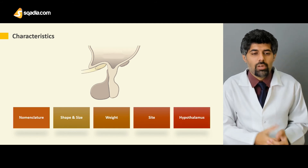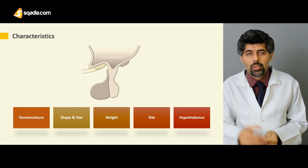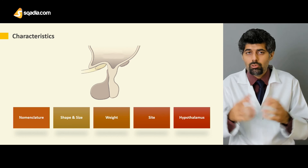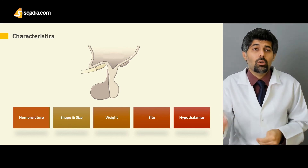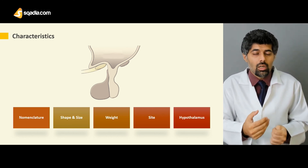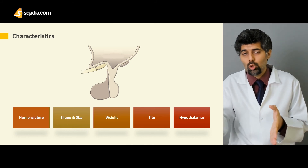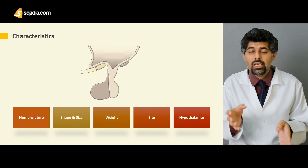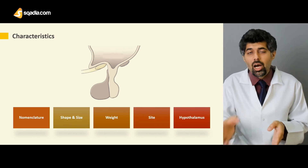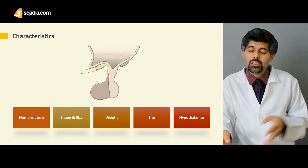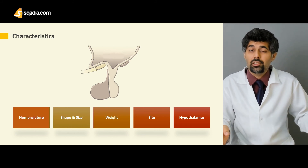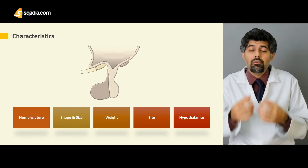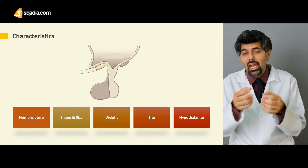Next we have the hypothalamus. The pituitary gland does not function alone — it has its own self-regulation, but there are other factors that contribute. The primary factor is the hypothalamus. The hypothalamus regulates the pituitary gland either by releasing certain releasing or inhibiting factors, or it directly synthesizes and releases pituitary hormones.